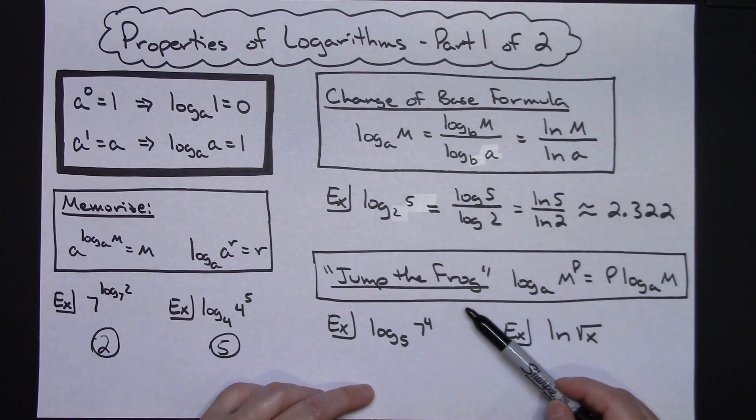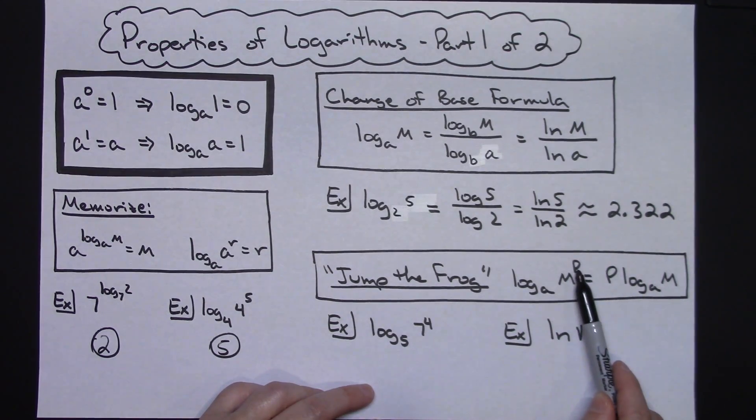Then he's going to jump off into the lake. So in other words, our rule says that our little exponent, our little frog here, can jump off into the lake. So it would be P times the log of that.